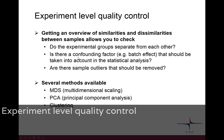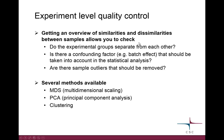The idea here is to get an overview of the similarities and dissimilarities between our samples. We want to know if our experimental groups — say cancer samples and normal samples, or treated and untreated samples — actually separate from each other. So was our experiment successful in that sense?